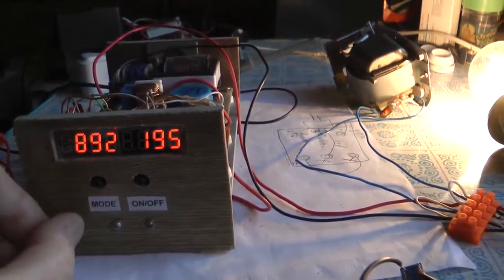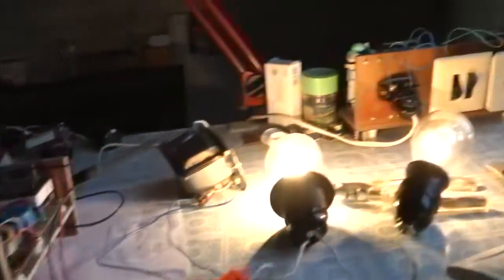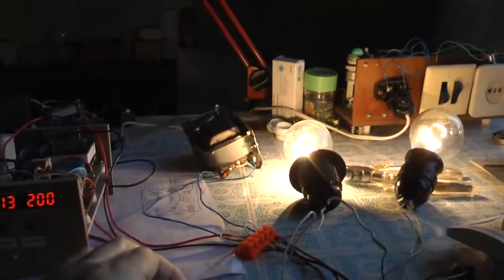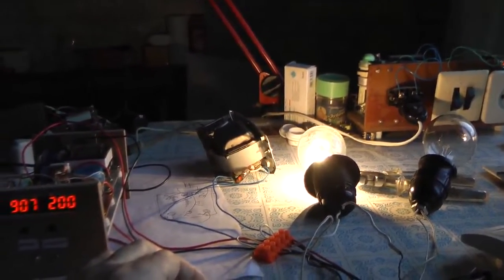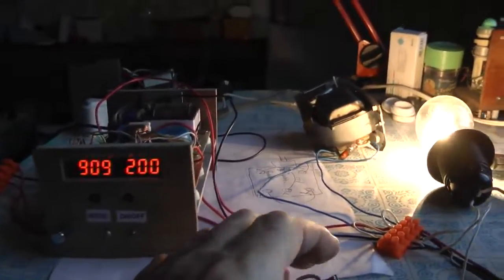On the left side of the display we have control voltage from PI regulator and the right side shows the output voltage RMS.